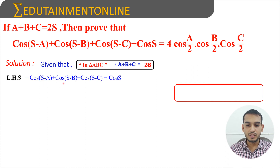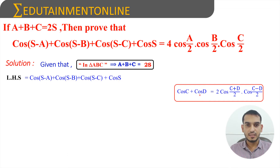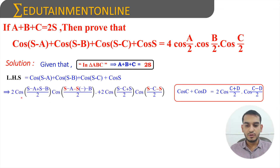For the first two terms and the last two terms, we will use the formula cos C + cos D = 2·cos((C + D)/2)·cos((C - D)/2). For the first two terms, C = s - a and D = s - b. For the last two terms, C = s - c and D = s. Using this formula, the first two terms become 2·cos((s - a + s - b)/2)·cos((s - a - (s - b))/2).